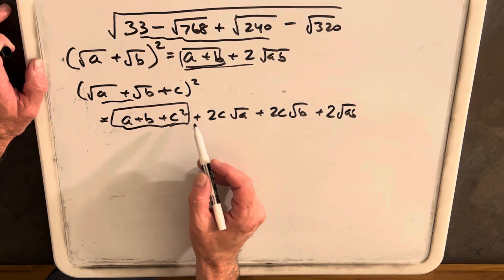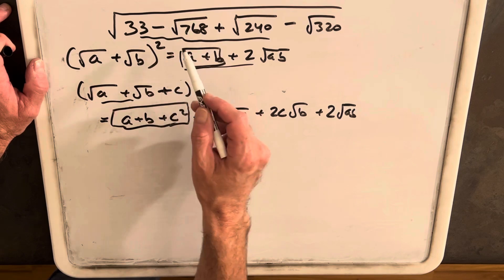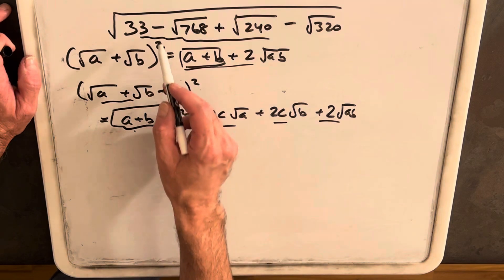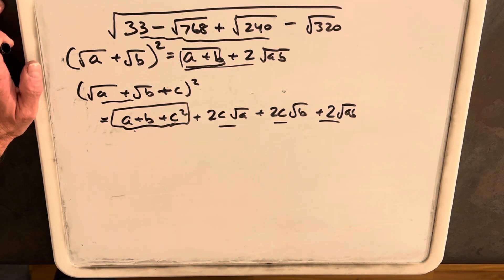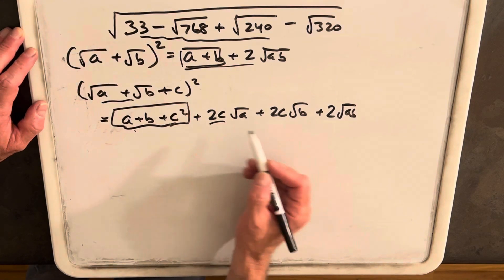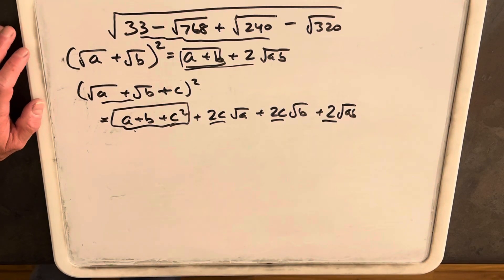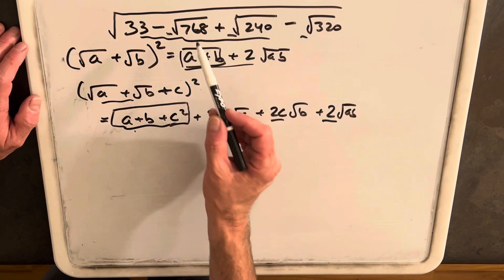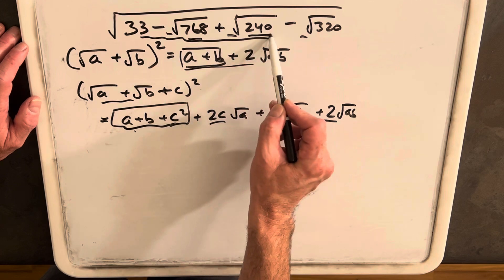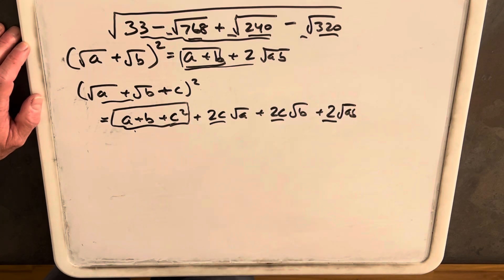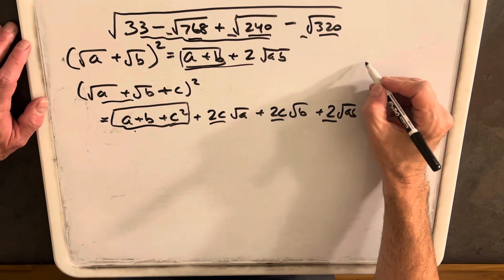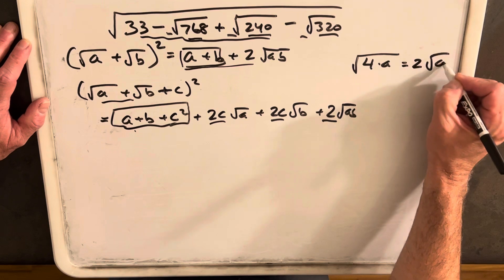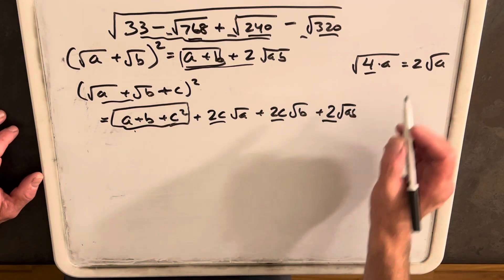I'm not worried about the signs right now, because that's a complicated factor. We have three radical terms and one number, which matches what we have up here in the radical. The next thing we notice is all these radicals have coefficients, and each coefficient is even — but we do not have that in our expression up here. However, each coefficient is actually clearly a multiple of four.